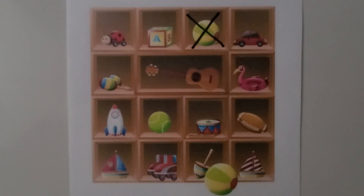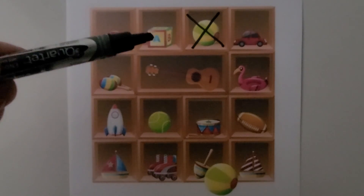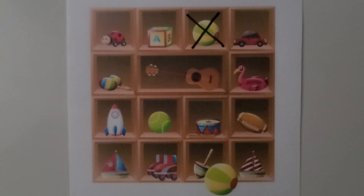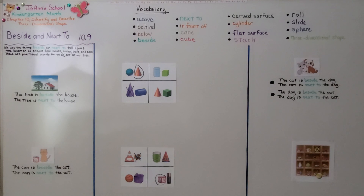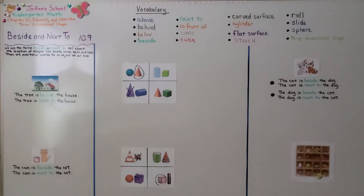We know that this is a cube because it has six flat surfaces and no curves. So remember, beside and next to mean the same thing — they mean by the side of something. Our next lesson, 10.10, we're going to learn about 'in front of' and 'behind.' Have a wonderful day, hit the like button for me, and I'll see you next time. Bye!